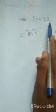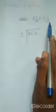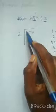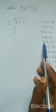The dividend is written inside the line and the divisor is written outside the line. First, write the table of 2: 1 two is 2, 2 twos are 4, 3 twos are 6, 4 twos are 8, 5 twos are 10, 6 twos are 12, 7 twos are 14, 8 twos are 16, 9 twos are 18, 10 twos are 20.